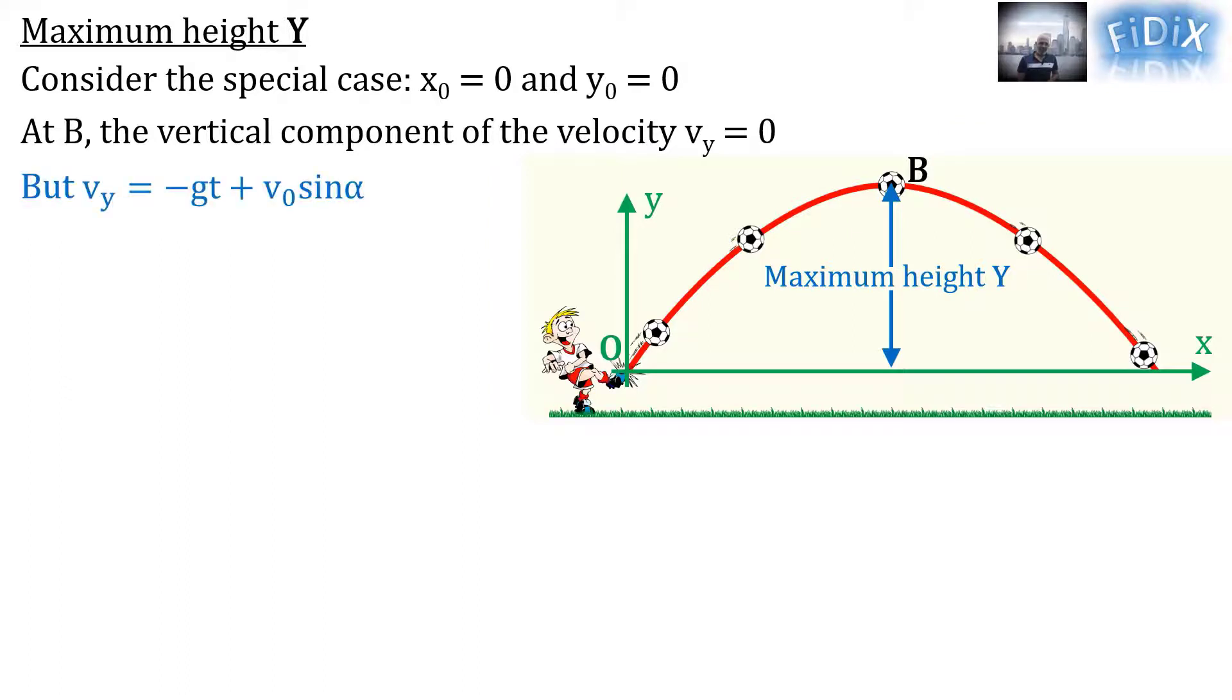But Vᵧ equals −gt + V₀ sin α. Thus, if we replace Vᵧ by zero in this equation and take −gt to the left side, we can get the time or date at which the center of mass of the projectile coincides with point B.